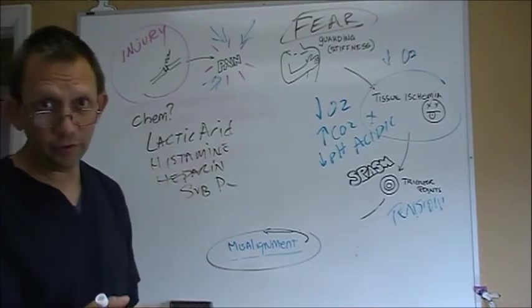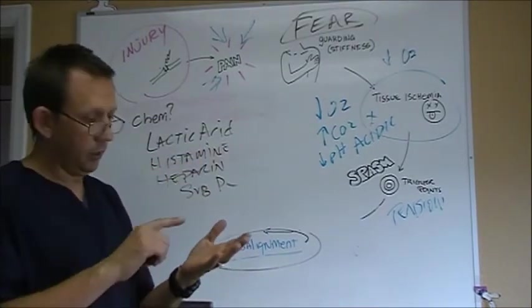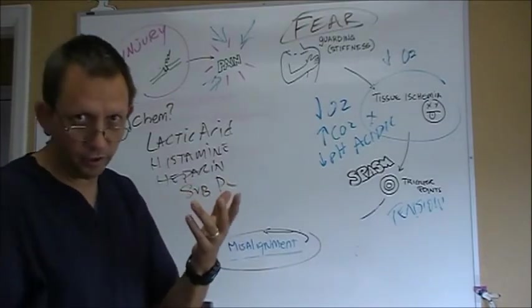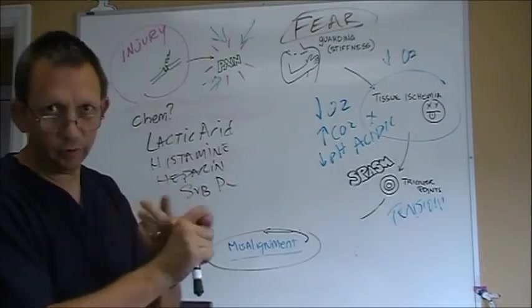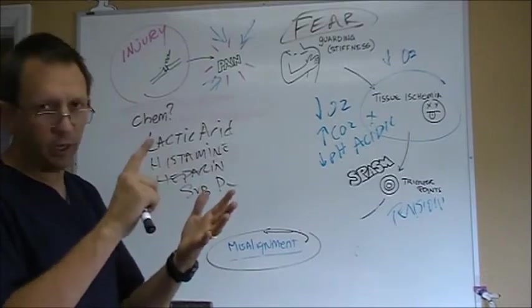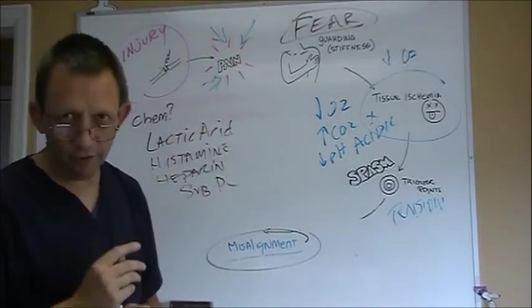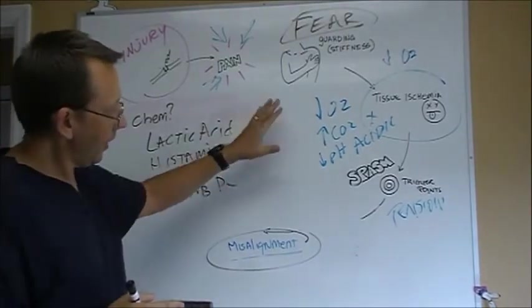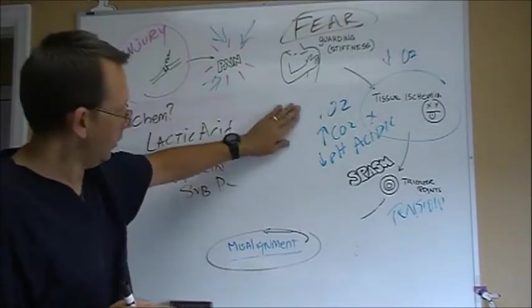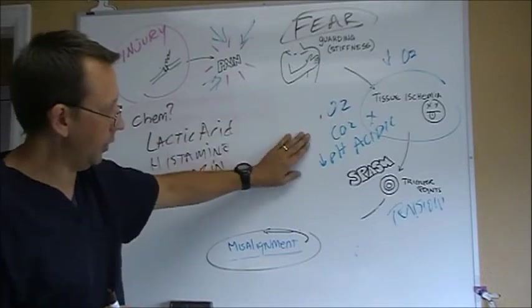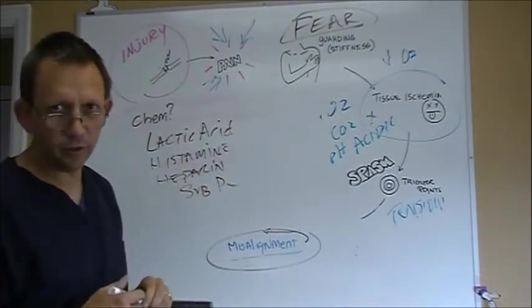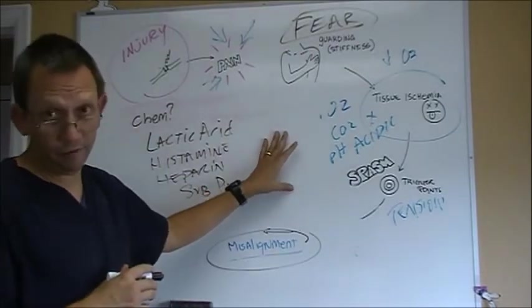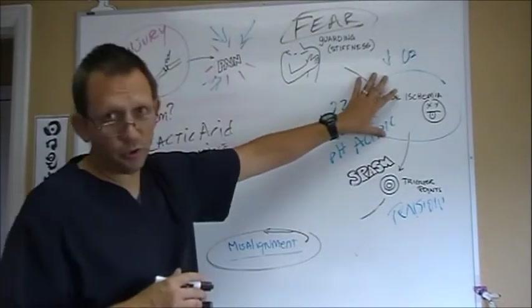What else can increase the blood flow through the area? Cupping, dry needling, trigger point therapy, massage therapy, mobilization, which is movement therapy, yoga, exercise. There's probably a zillion other things you could do to increase blood flow. Heat, of course. That will increase oxygen. It'll decrease CO2. It'll increase the pH. By increase pH means it makes it more alkaline, which your body likes the alkaline stuff. Over here tissue ischemia goes away.